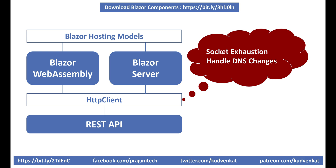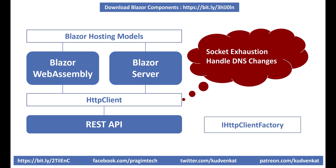Going through all these different approaches is too time consuming and only makes it more confusing. To keep it simple, let's use the recommended approach. For real-world enterprise apps, the recommended approach is to use IHttpClientFactory. This approach works with both hosting models — Blazor WebAssembly and Blazor Server — and it's the same code, which means it's easy to convert between the two.